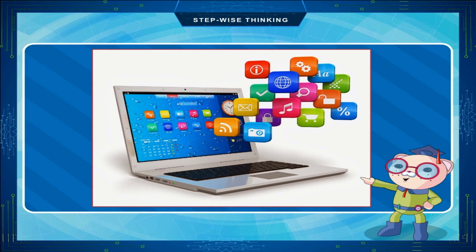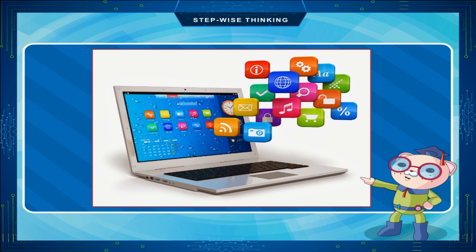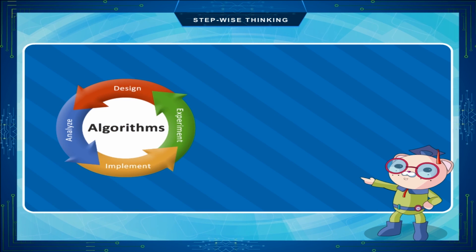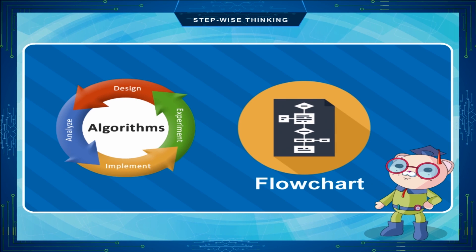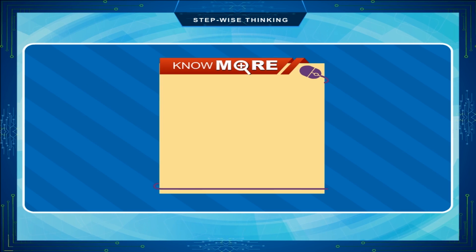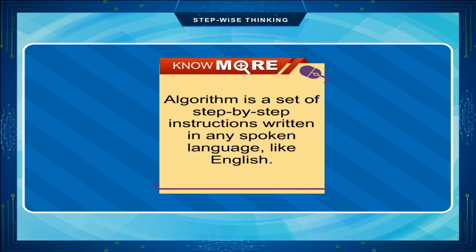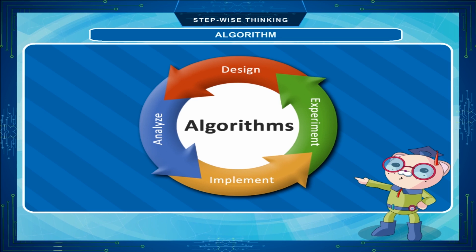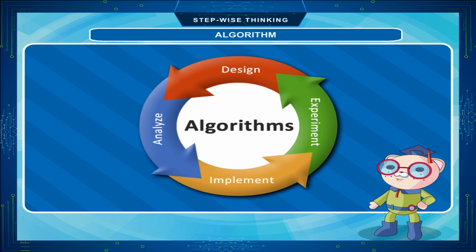A computer is an electronic device which works on a set of instructions called programs. A computer cannot do any work on its own — it depends totally on our instructions. In this chapter, we will discuss algorithm and flowchart, which are two important methods to understand computer programming. An algorithm is a group of steps to solve any particular problem, written in simple English. It is a division of work into a step-by-step process.